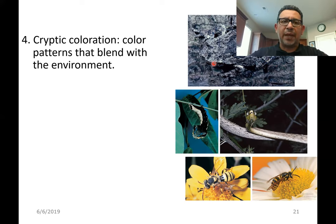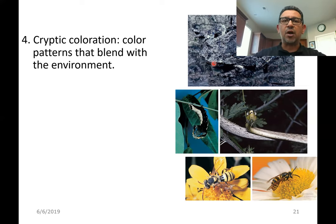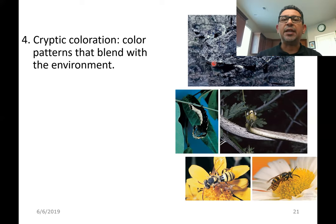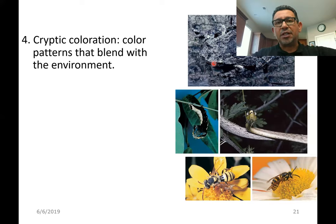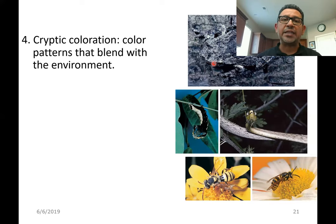Cryptic coloration simply means blending with the environment, whatever the environment looks like. Sometimes the environment can be bright — think about the beautiful colors of the coral reef, where many fish hide in that bright background by also producing bright colors. Think also about the bright green plumage of a parrot. In a tropical country, you can hear parrots moving in a tree but be lucky to spot one, because that bright green plumage blends perfectly with the foliage of the leaves.